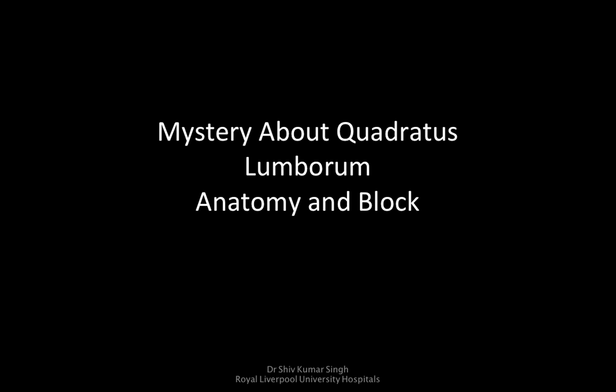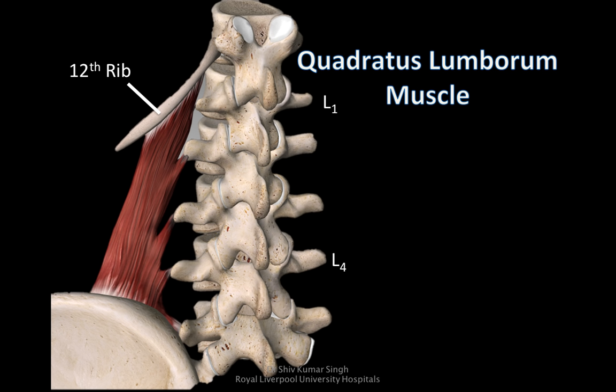In this video I'm going to talk about the mystery of Quadratus lumborum anatomy and block. The Quadratus lumborum muscle takes origin from the iliac crest and the iliolumbar ligament, and then inserts into the 12th rib and the transverse processes of L1, L2, L3, and L4.